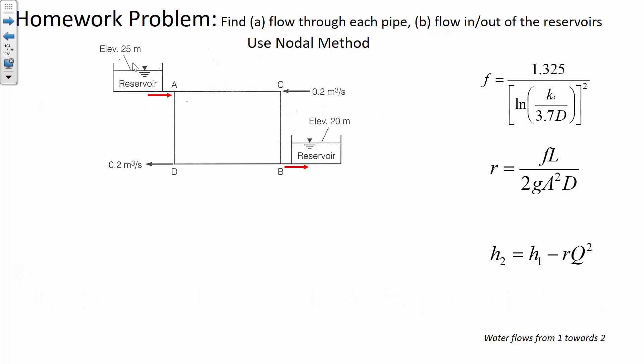Here's the system, and the fully turbulent flow equation — if we're assuming during the first iteration that things are fully turbulent. What you need to find on this problem is the flow rate through each pipe and then the flow in and out of the reservoirs. To solve the problem, you have to start by assuming the flow direction. We've got junctions A, B, C, and D.